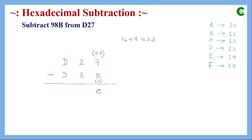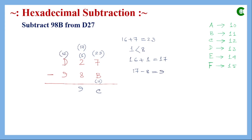Since we borrowed from the middle position, 2 becomes 1. But we need to subtract 8 from 1, which is not possible, so we borrow again. 16 is borrowed, making 16 plus 1 equal to 17. 17 minus 8 is 9, so we write 9. The most significant digit D is then decreased by 1, becoming C, which is 12. 12 minus 9 is 3, so the final result of the subtraction is 39C.